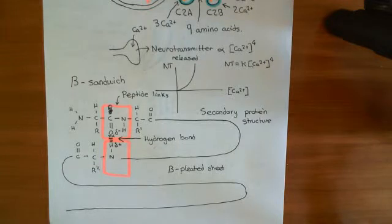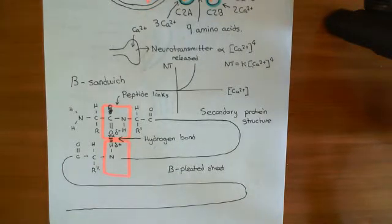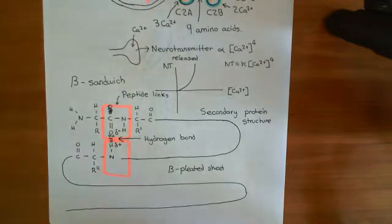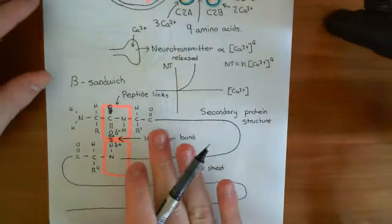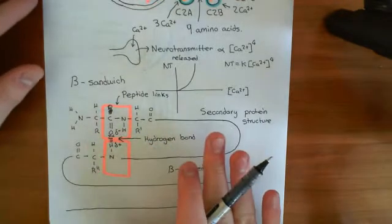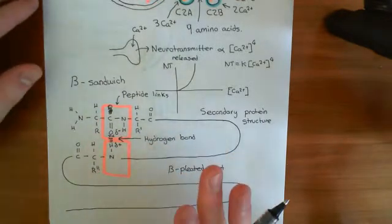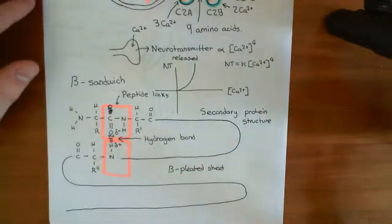Now what I want to talk about is what a beta sandwich actually is. A beta sandwich is basically two beta-pleated sheets stacked on top of one another.